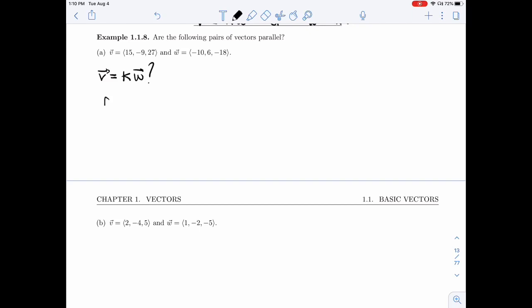All right, so V is 15, minus 9, 27. KW is minus 10, 6, minus 18 times K.